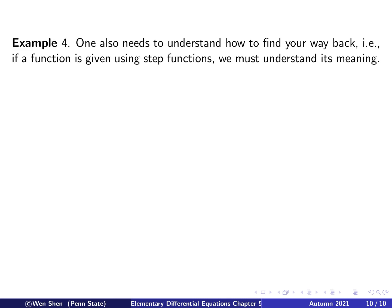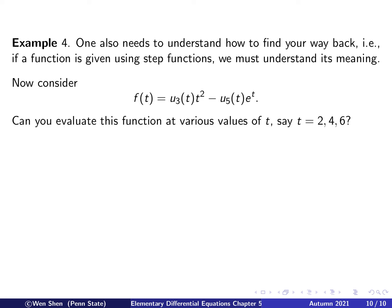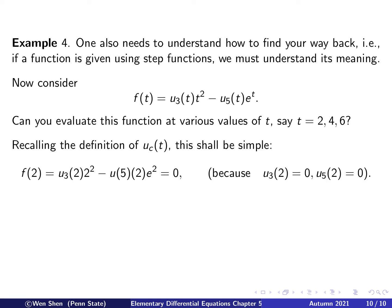The next example is kind of the inverse of what we have done. We also need to understand how to find our way back — that is, given a function expressed using step functions, we must understand what it means. Consider the function f(t) equal to u_3(t) times t-squared minus u_5(t) times e^t. Can we evaluate this at various values of t, say t equals 2, 4, and 6?